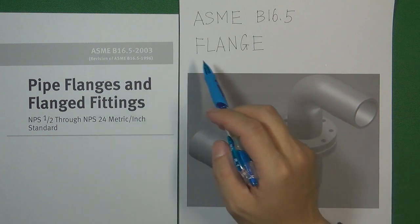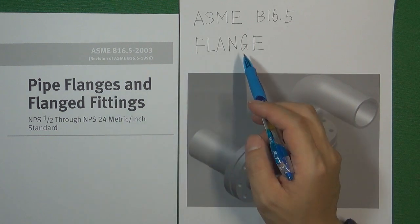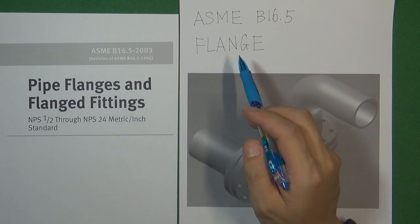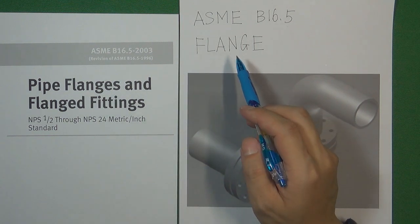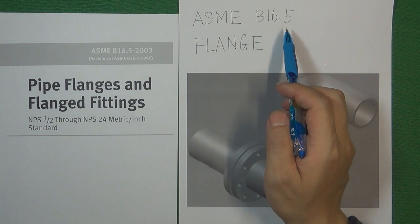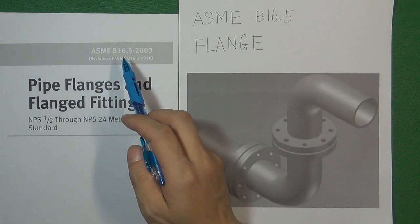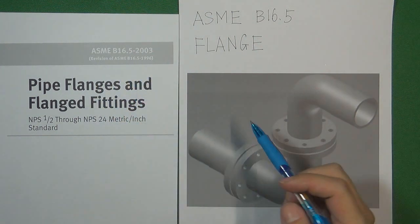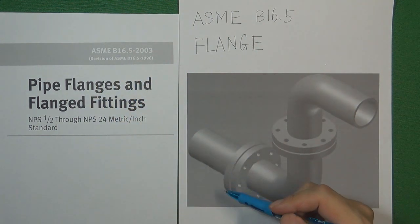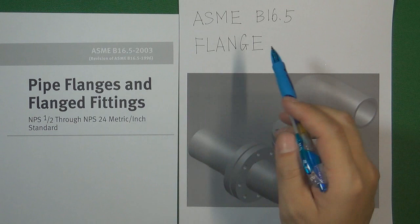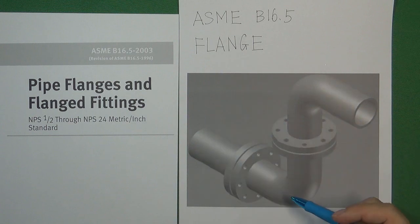So we use one kind of mechanical component, which is called a flange, to connect pipes together. In the flange industry, the most important standard is ASME B16.5, which covers almost all kinds of flanges in the flange industry.